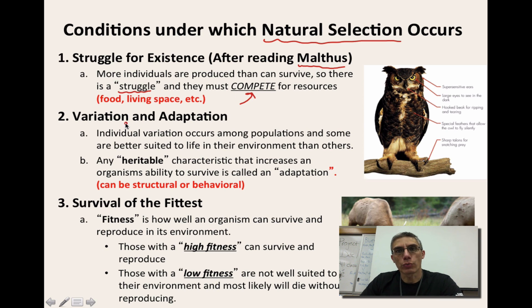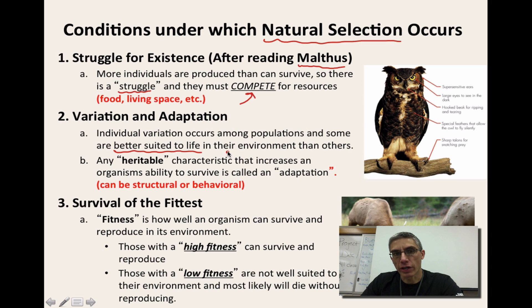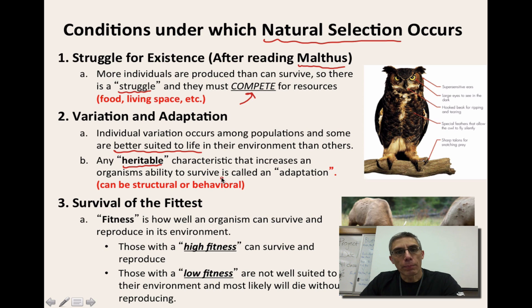The second condition under which natural selection occurs is called variation and adaptation. For there to be a struggle, there needs to be variation within the population, and those that are better suited to life in their environment than others are most likely going to be able to survive. This variation has to be some sort of heritable characteristic, which means you need to be able to pass it on to your offspring. Any heritable characteristic that increases an organism's ability to survive is given a special name — we call it an adaptation.